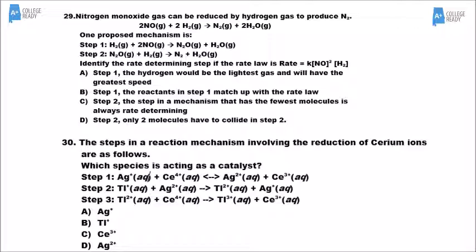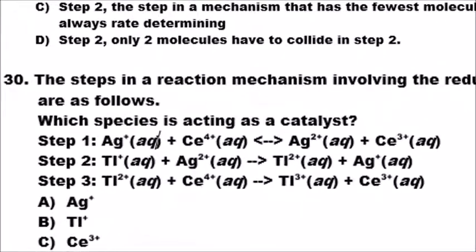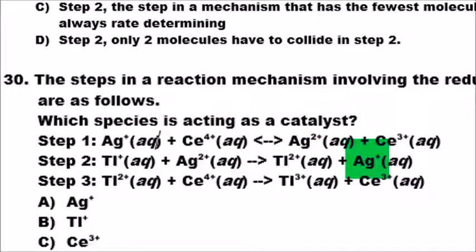For number 30, this is not about intermediates — it asks which species is a catalyst. A catalyst is present at the beginning and regenerated at the end, as if nothing happened to it. We have silver ion and cerium ion. Silver ion is produced at the end of the second step and never consumed again — it's present at the start of step one and at the end of step two. The cerium ion is used up in steps one and three. Since silver ion gets regenerated, the silver ion is the catalyst.